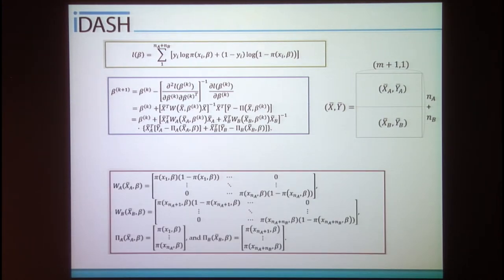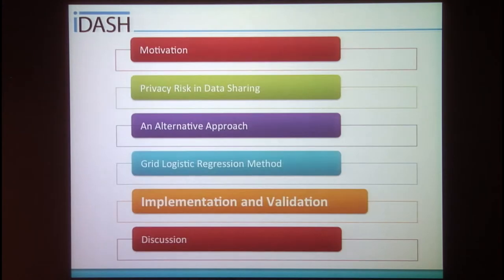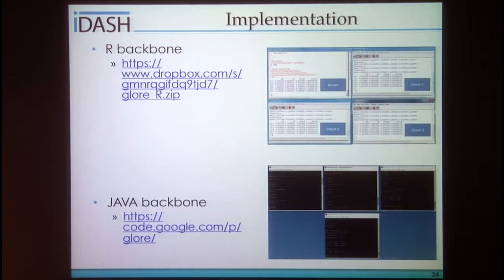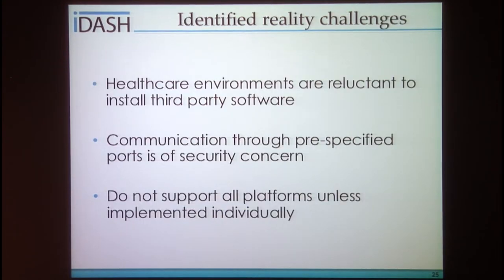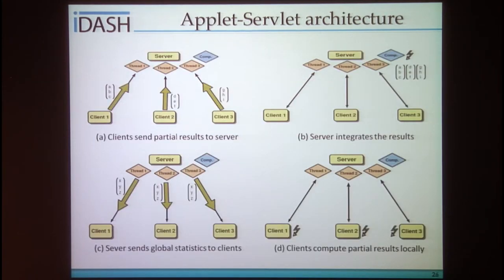The detailed components are described in the text box — the pi function is the logistic regression function shown earlier. We first developed a backbone in R and Java to validate the model. Our next step was to develop a client-side UI to wrap up the APIs. However, we encountered challenges: healthcare environments are reluctant to install third-party software and unwilling to open new ports. Due to these reasons, we decided to build a web service to overcome the challenge.